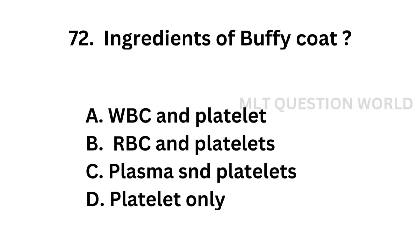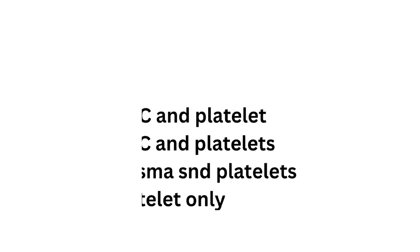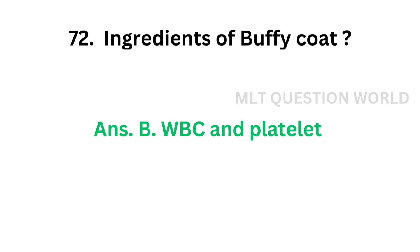Question number 72: Ingredients of Buffy coat — Option A: WBC and platelets, Option B: RBC and platelets, Option C: Plasma and platelets, Option D: Platelets only. The correct answer is Option A, WBC and platelets. Buffy coat contains WBC and platelets.